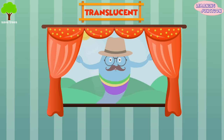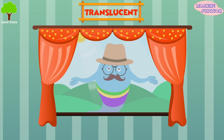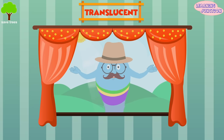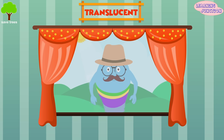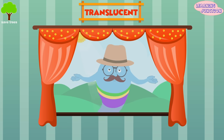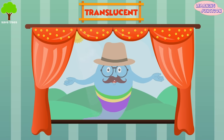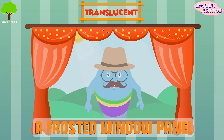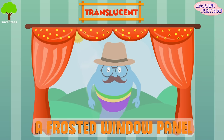Translucent Objects: An object that is cloudy and only allows part of the light to pass through is called a translucent object. For example, a frosted window panel.